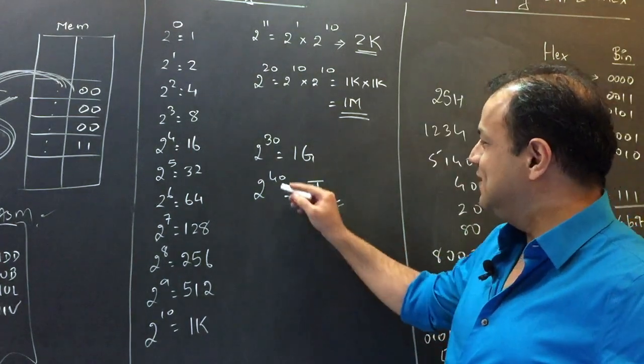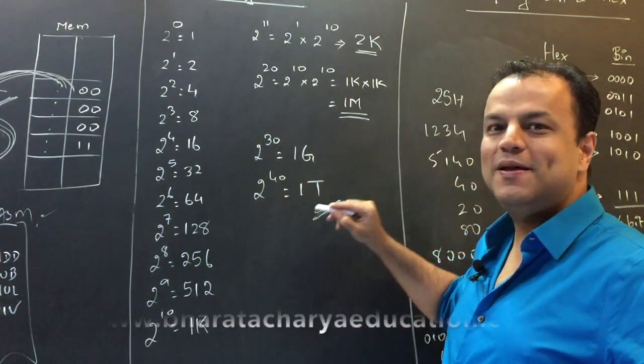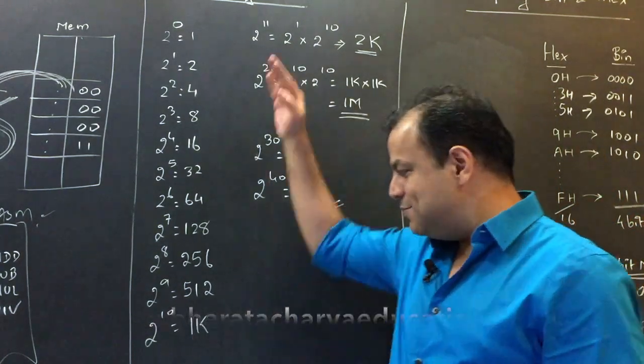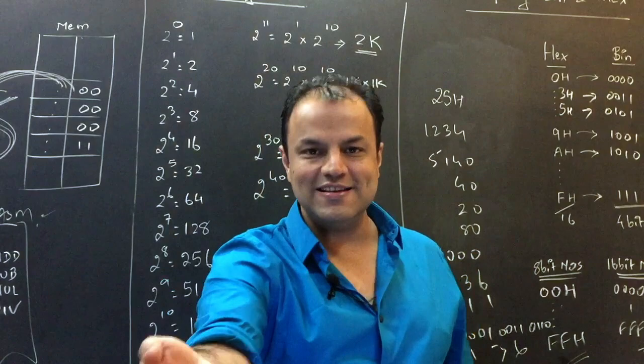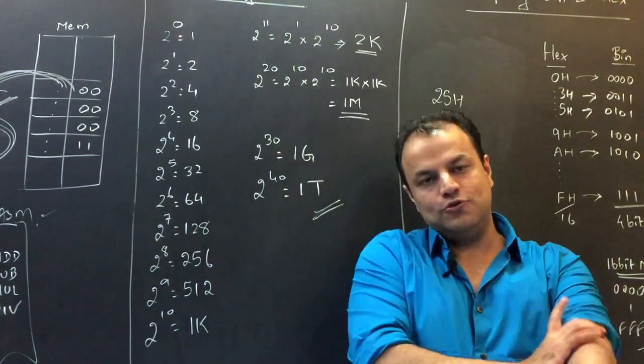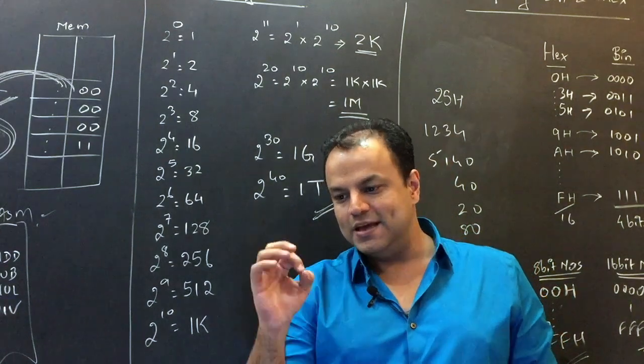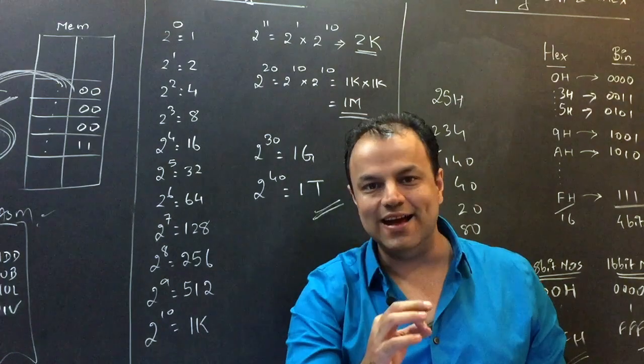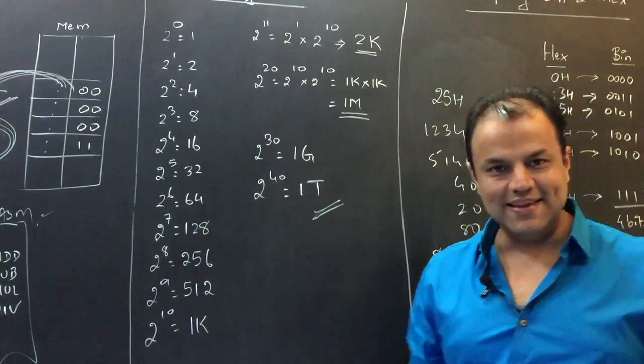Two raised to 30. Two raised to 30 is two raised to 10 multiplied by two raised to 20. Two raised to 10 is a kilo. Every time you hit a kilo, you go to the next level. Every time you reach thousand, you go to the next level. So two raised to 30 is a kilo into a mega. A kilo into a mega becomes a giga. So two raised to 30 is a giga.